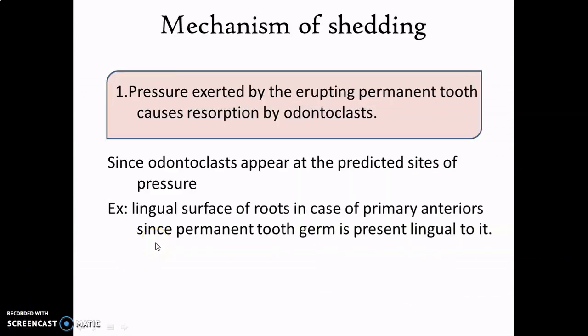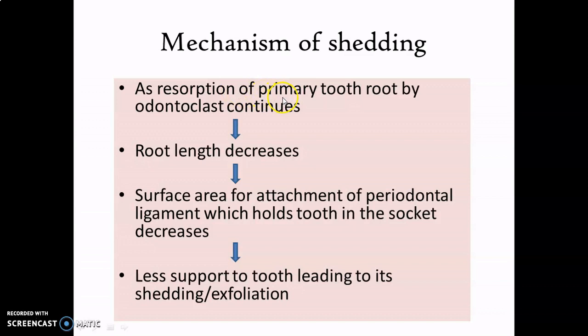Now let's see a few mechanisms of shedding. As discussed, the pressure exerted by the growing permanent tooth causes resorption of the primary tooth by odontoclasts. This mechanism is supported by the fact that odontoclasts appear at the predicted sites of pressure — for example, on the lingual surface of roots in the case of primary anteriors, since the permanent tooth germ is present lingual to it. As resorption of the primary tooth root continues, the root length decreases, the surface area for attachment of the periodontal ligament decreases, and there is less support to the tooth, leading to its shedding or exfoliation.